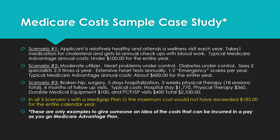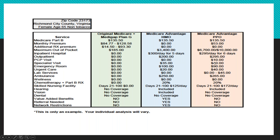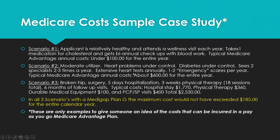Scenario two: a moderate utilizer with controlled heart problems and diabetes who sees two specialists two to three times a year — an endocrinologist and cardiologist — has extensive annual heart tests, and may have one to two emergency room visits per year. Typical Medicare Advantage annual out-of-pocket cost: about $600 for the whole year, based on specialist co-pays of $35–$40 and emergency room visits around $90–$100.